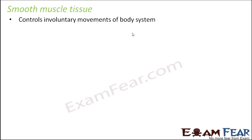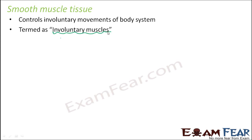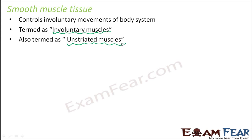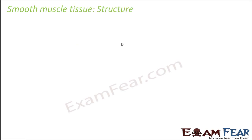Now let us talk about the next type of muscle tissue: smooth muscle tissue. These control the involuntary movements of the body system — those kinds of movements which are not under our control and do not happen as per our will. Such movements are controlled by smooth muscle tissue. They are therefore also called involuntary muscles, and also termed as unstriated muscles because there are no striations — the alternate dark and light bands present in skeletal muscle tissue are no longer present here.